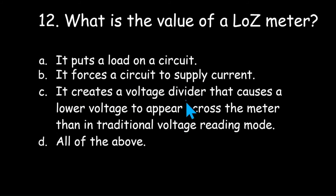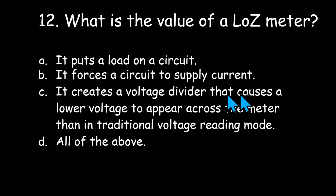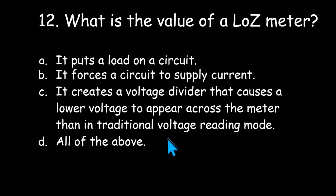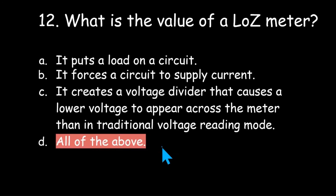Number twelve: what is the value of a low-Z meter? It puts a load on the circuit, it forces a circuit to supply current, it creates a voltage divider that causes a lower voltage to appear across the meter than in traditional voltage reading mode, or all the above? The answer is all the above — all these are true.